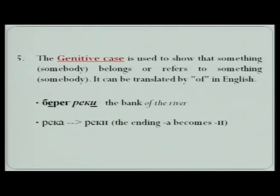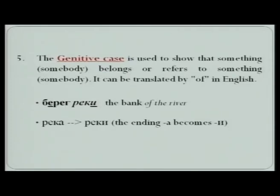The genitive case is used to show that something or somebody belongs or refers to something or somebody, and it can be translated by of in English. For example, the bank of the river — rika changes into rikki. Because in Russian, instead of using of, the last letter of the noun changes into -e if it is a feminine gender word. That is why rika changes into rikki.